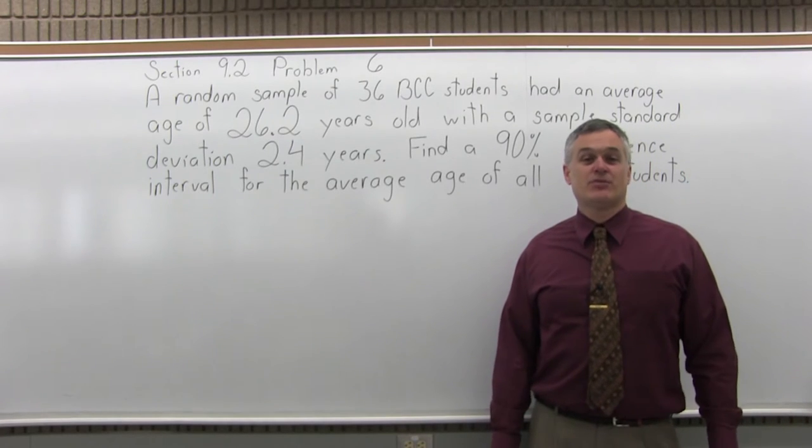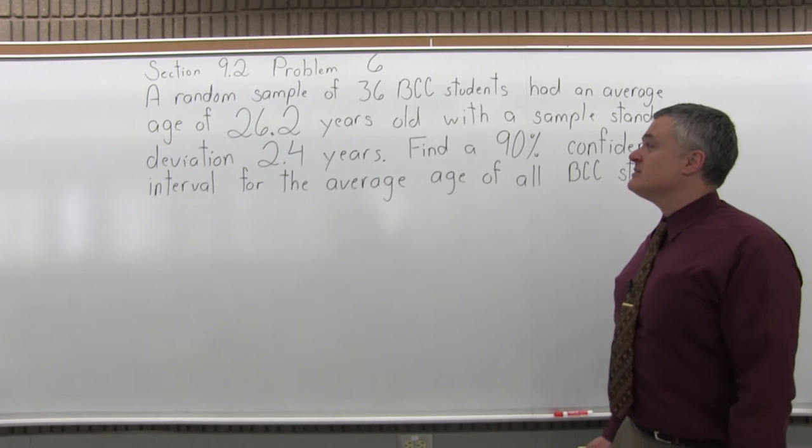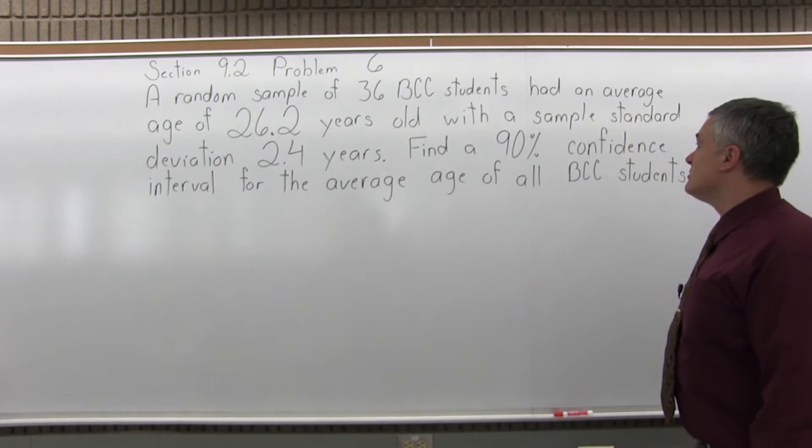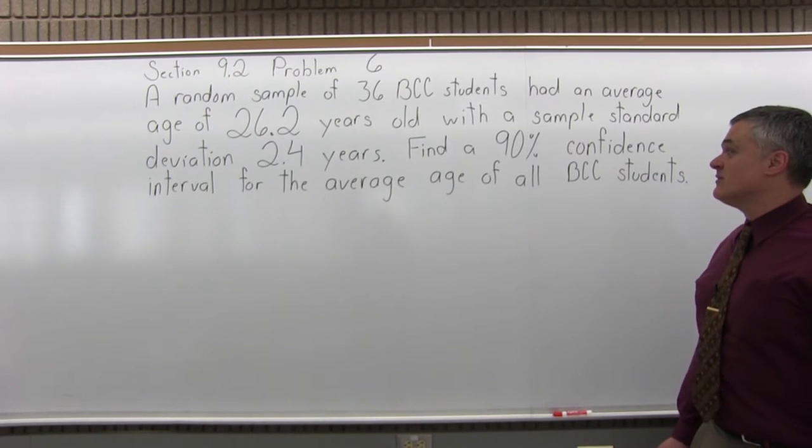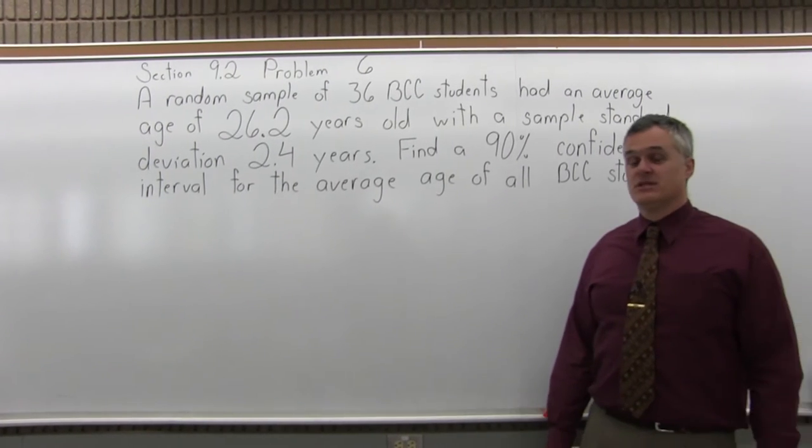This is Section 9.2, Problem 6. It says a random sample of 36 BCC students had an average age of 26.2 years old with a sample standard deviation of 2.4 years. Find a 90% confidence interval for the average age of all BCC students.